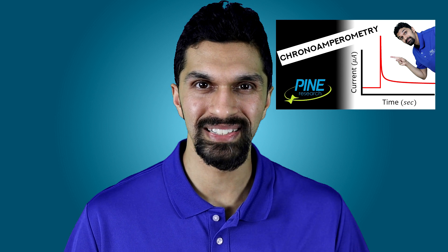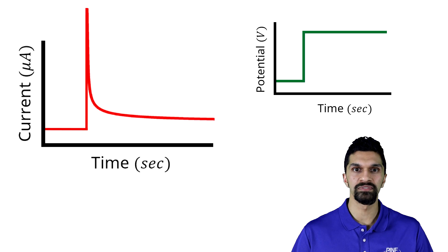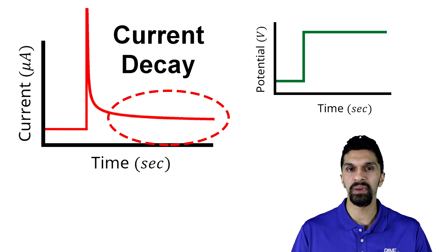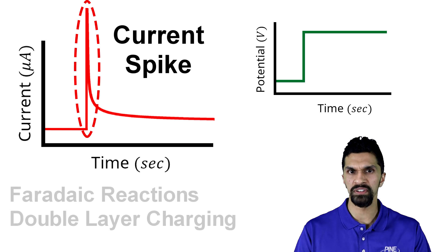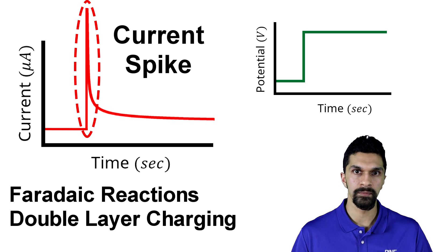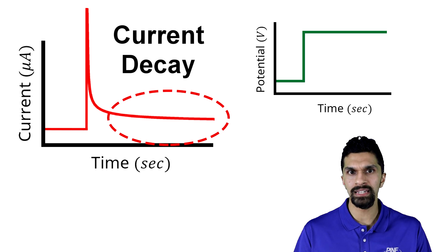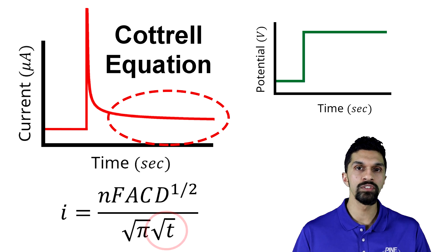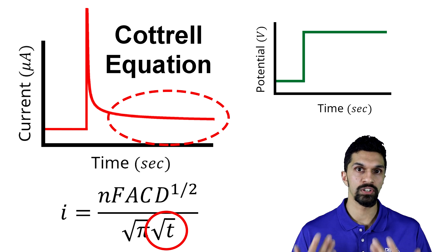To help us understand what's going on, we're going to do a chronoamperometry experiment. If you are unfamiliar with chronoamperometry, I'd recommend you watch my video on it. In our chronoamperometry experiment, we step the potential and we observe a spike in the current followed by a gradual decay. This initial spike in the current is associated with faradaic electron transfer reactions as well as the charging of the electrical double layer. The current decay is mathematically described by the Cottrell equation, where we observe a 1 over the square root of time dependence on the current.